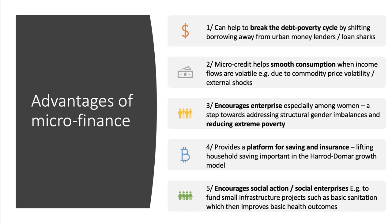Fourthly, microfinance provides a platform for saving and insurance and increasing saving — you'll be able to link that back to the importance of saving in the Harrod-Domar growth model. And crucially, microfinance is oftentimes a way of providing funding and finance for social actions and social enterprises. It could be the most basic infrastructure projects, such as a local community setting up a business to provide outdoor toilets, irrigation services, or crop management services for farming. Basic infrastructure can improve health outcomes.